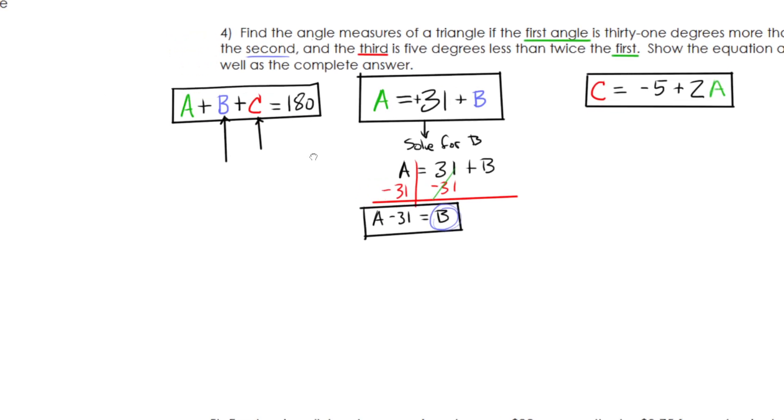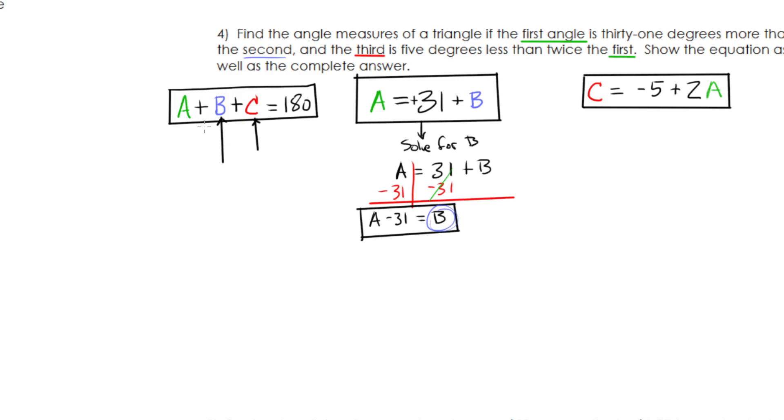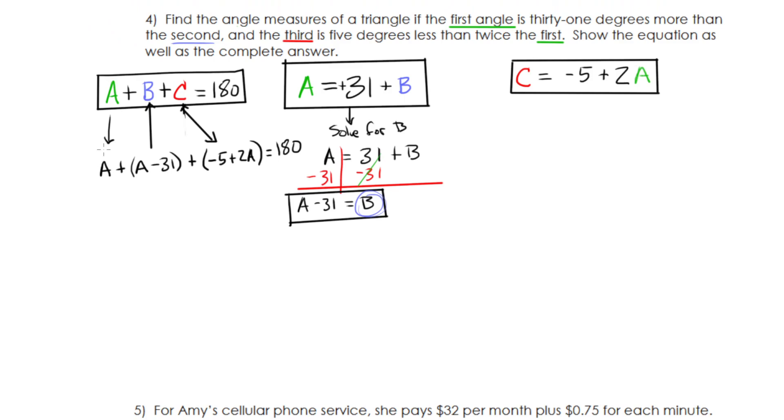So I'm going to end up with an equation which just has A. This B is going to be this B from over here. So I'm going to have A minus 31 in that spot. And then I'm going to have my plus my C. So my C is this term. So I'm going to have a parenthesis negative 5 plus 2A. And my A comes down. So I have A and then equals 180. That's a lot. A lot happened here. And I get one nice long equation that we will solve later. So this equation we're going to solve later.